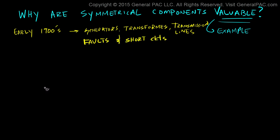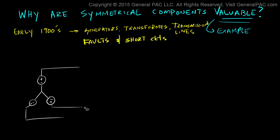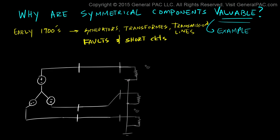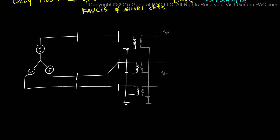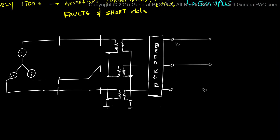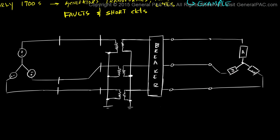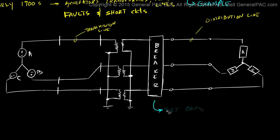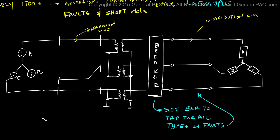Let's start this example by drawing a simple three-line diagram. We'll draw our three-phase generators, connected to a short transmission line. Then we have a step-down power transformer connected Y-grounded, Y-grounded. We have an AC three-phase circuit breaker on the secondary side of the transformer, some distribution line, and a dedicated three-phase load.